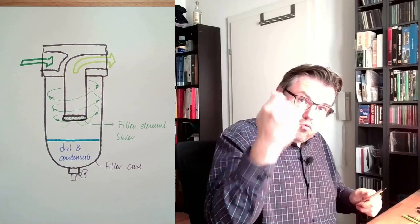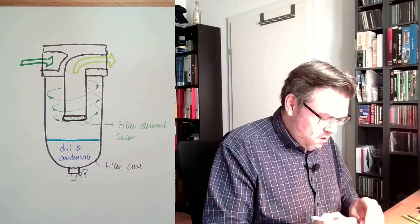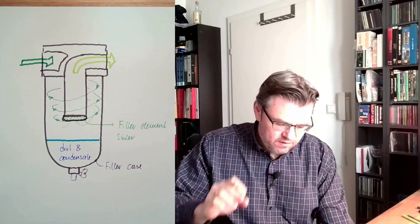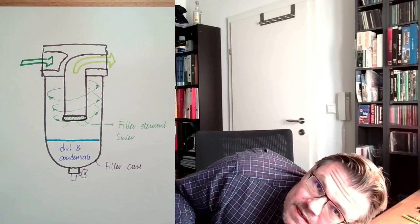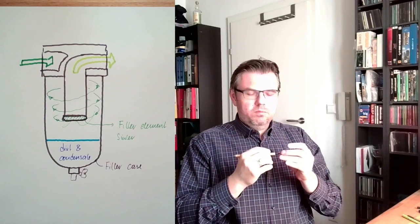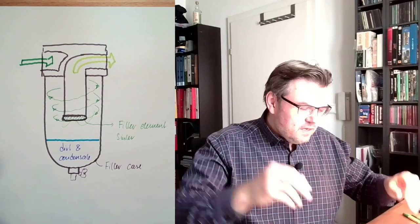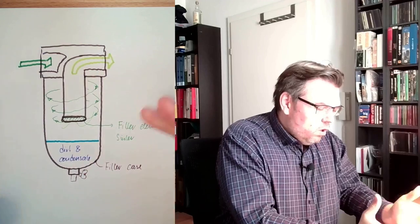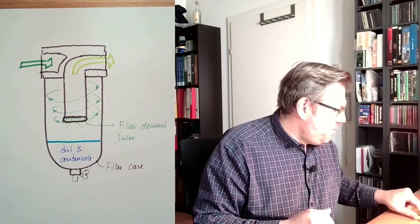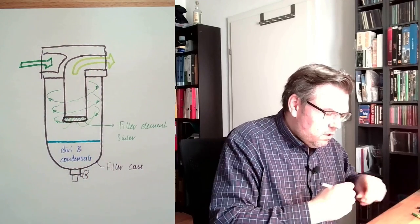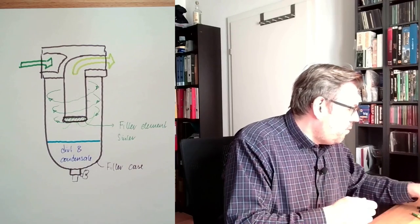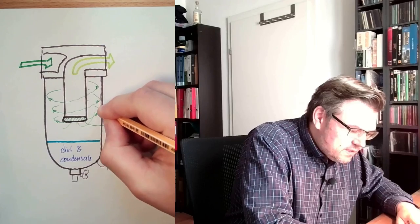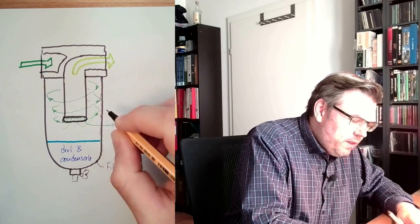If something is spinning very fast, we have centrifugal forces. So if there is dust inside, if there is water condensate inside, little drops, they will all go to the outside wall of the filter case. They will summarize up here at the outside wall, somewhere here.